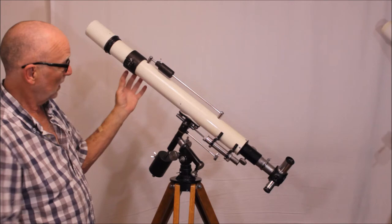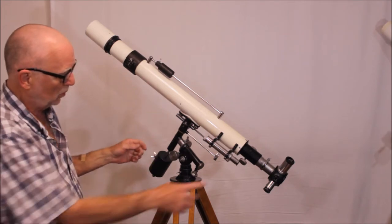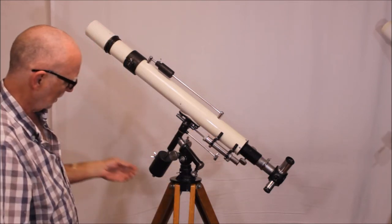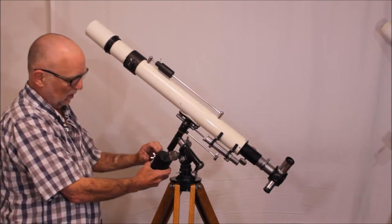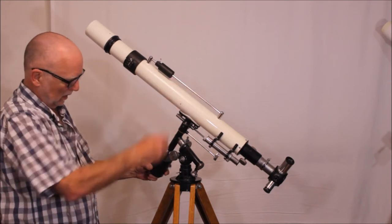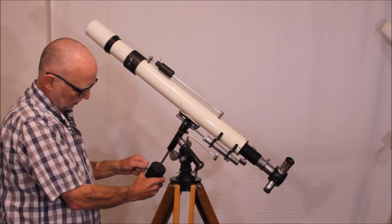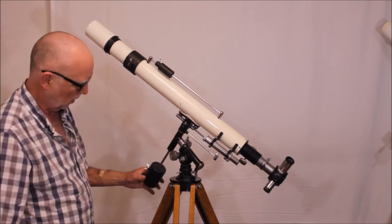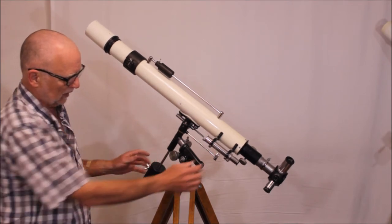So now you've got something very massive at the front of the tube to counterweight this very massive thing at the back end. Now of course you have a lot of weight up here above the polar axis, so you better slide this down as far as you can go and hopefully that'll be enough.